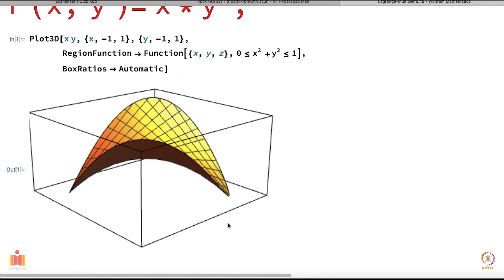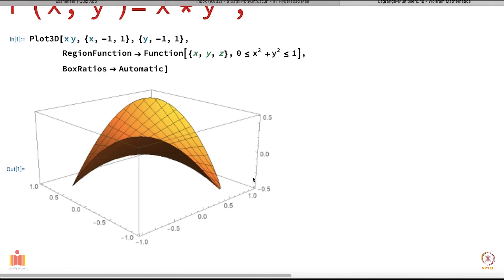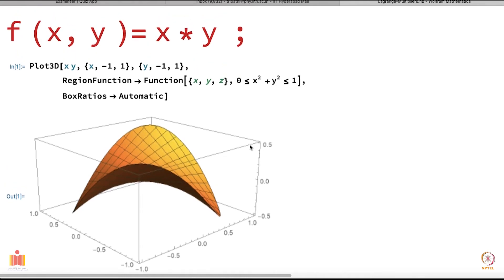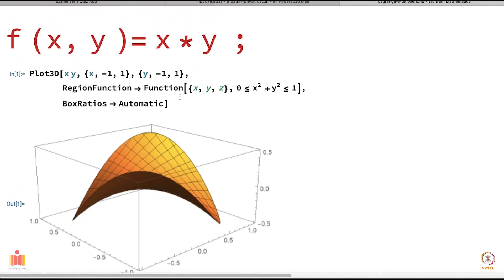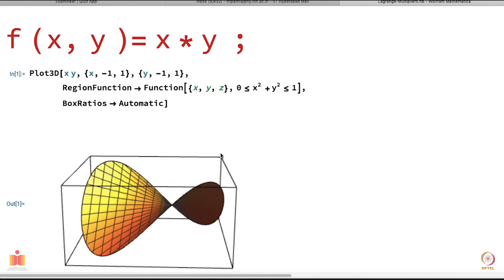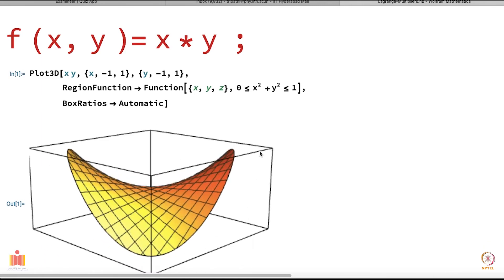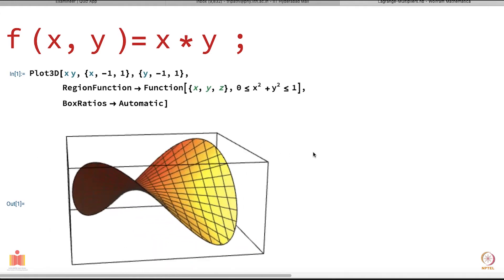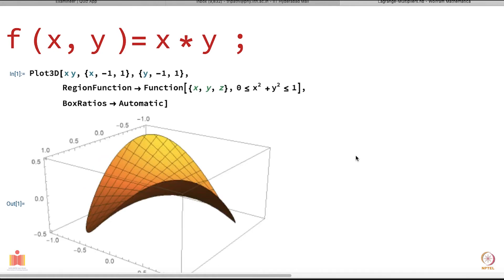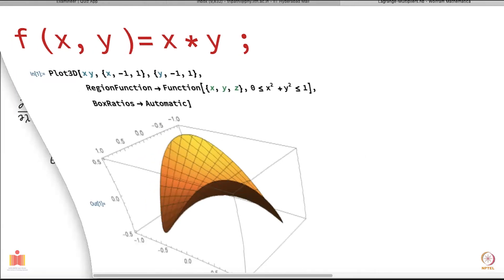The values at the extremum points: x was plus or minus 1 over sqrt(2) and y was plus or minus 1 over sqrt(2), so the function value x times y equals 1/2, which is 0.5, or minus 1/2. That is what you see in the plot — two points touch 0.5 and two touch minus 0.5. This visualization encourages you to play with Mathematica to verify your calculations.